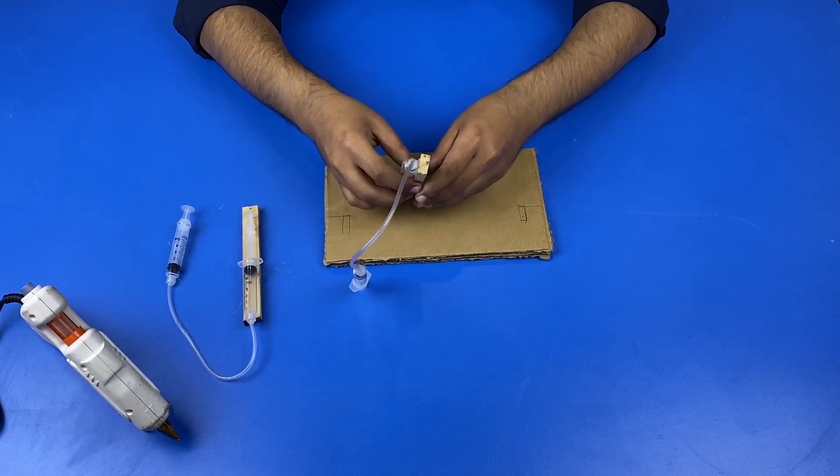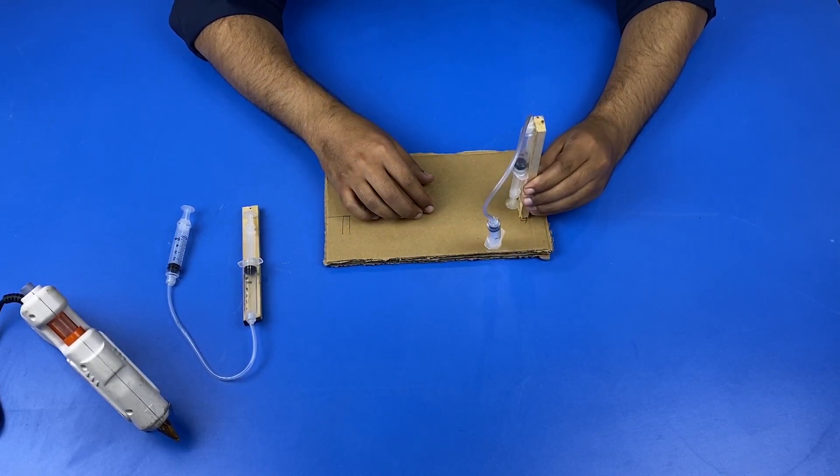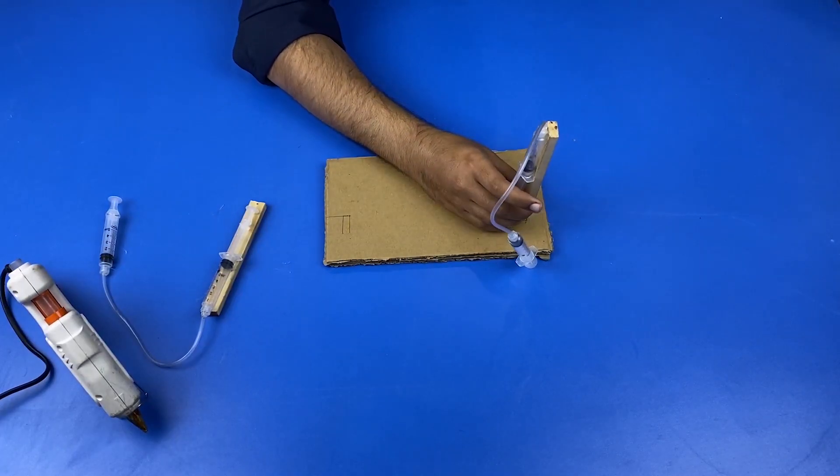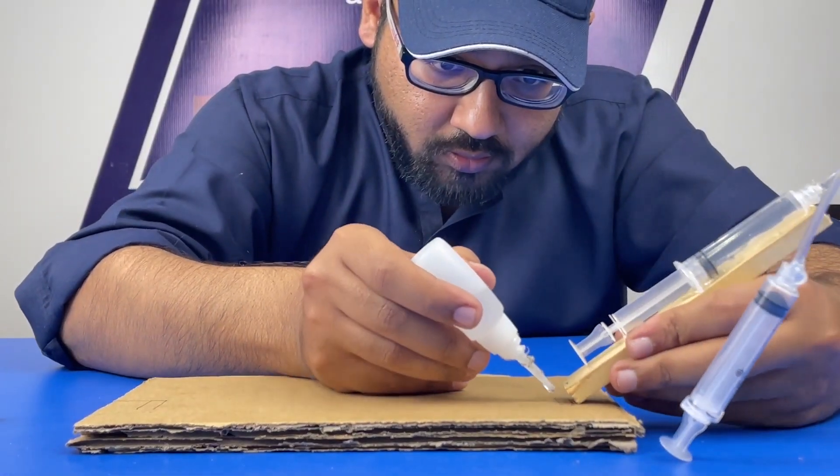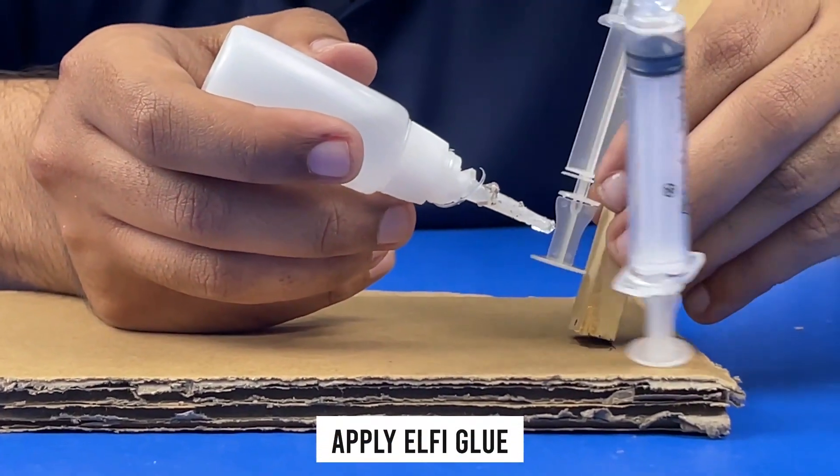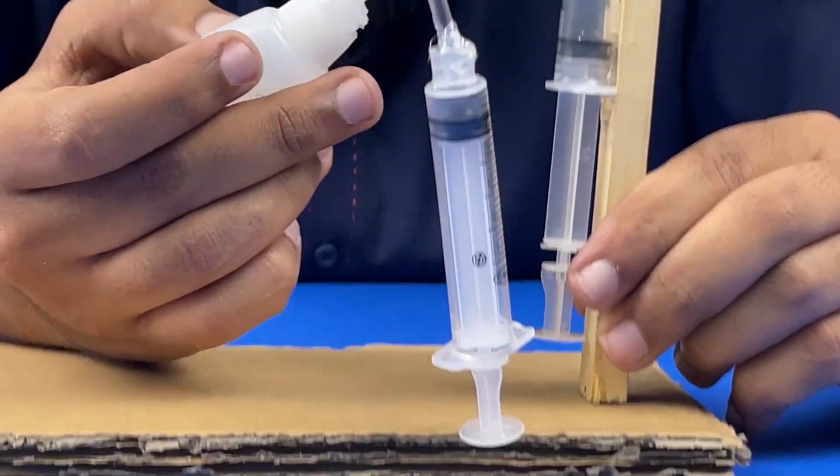Now it's time to vertically place both the sticks on the cardboard. To attach the stick on the cardboard, Daniel uses Elfie glue which is a strong glue. He applies this glue to the base of both the sticks and sticks them perfectly.